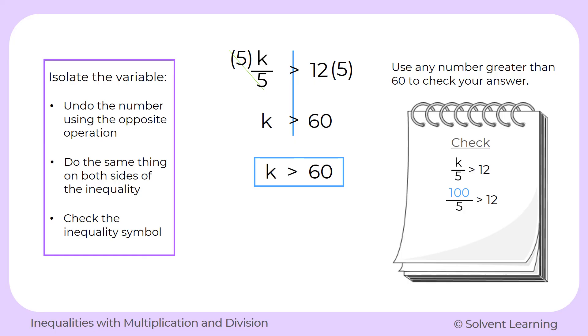So now we have 100 divided by 5 on the left side, which simplifies to 20. So now I have 20 is greater than 12. And that is true. So that tells me that we do have the correct inequality symbol and our solution is k is greater than 60.